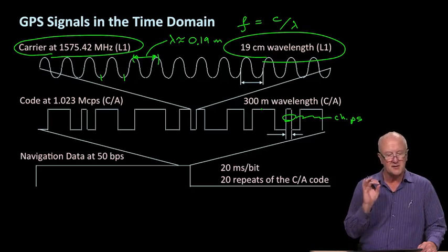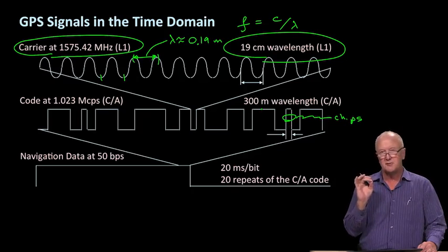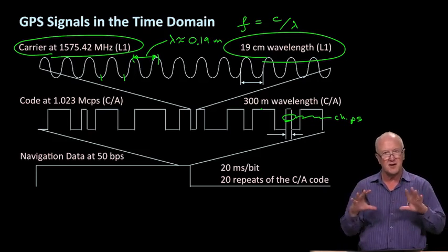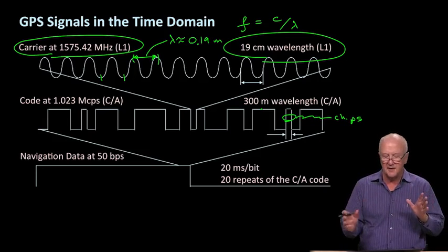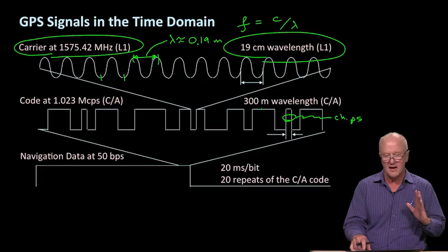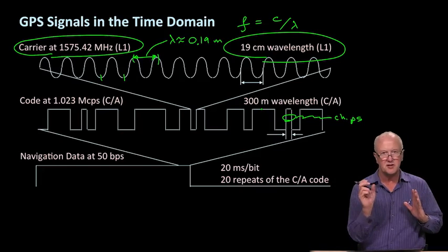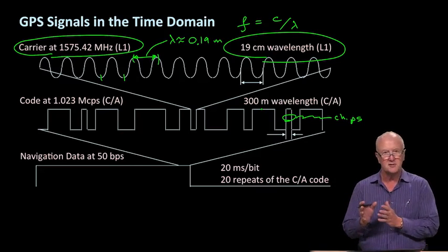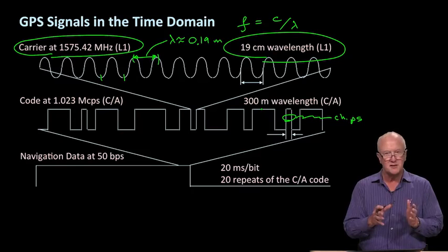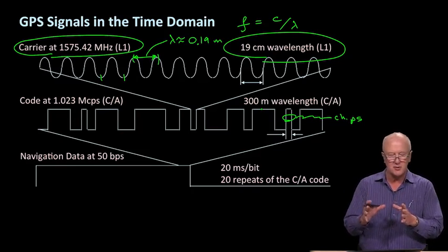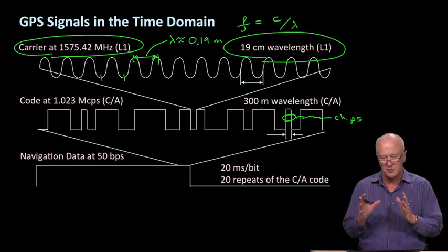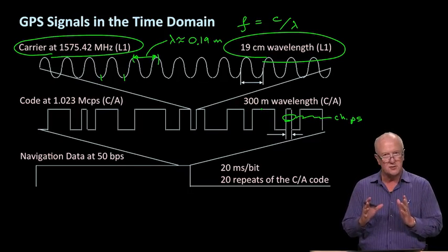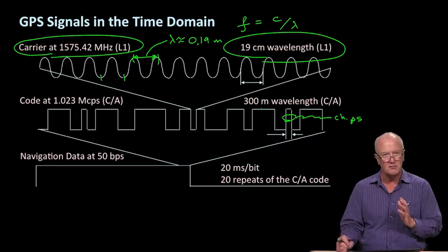Each chip is 300 meters long. There's a certain sensibility to that. If we want to use GPS to measure our position with an accuracy of around 3 meters, that means we have to resolve the arrival time of an individual chip to 1%. One percent of the 300 meter CA code wavelength would be 3 meters, so we're doing pretty well.